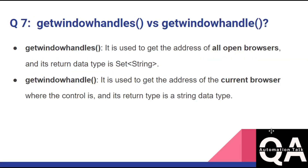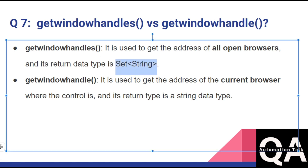The next question is: what is the difference between getWindowHandles() and getWindowHandle()? getWindowHandles() is used to address all the open windows of any browser and returns a Set of Strings. getWindowHandle() returns only the current opened window as a plain String. So getWindowHandles() returns a Set, whereas getWindowHandle() returns a String — that is the key difference.